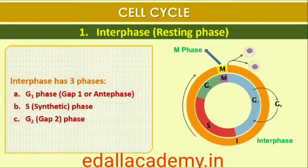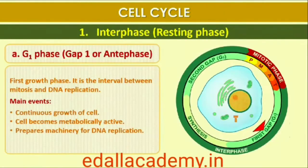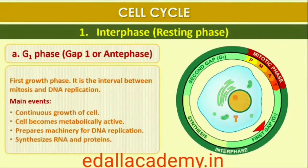The interphase is divided into three further phases: G1-Phase, S-Phase, and G2-Phase. The G1-Phase corresponds to the interval between mitosis and initiation of DNA replication. During G1-Phase, the cell is metabolically active and continuously grows but does not replicate its DNA.